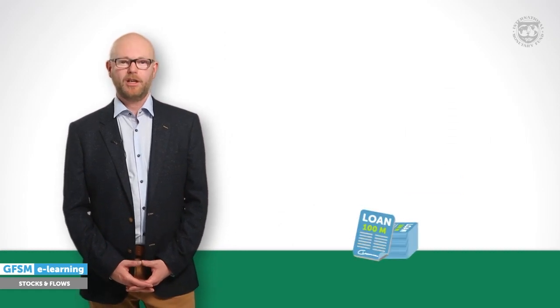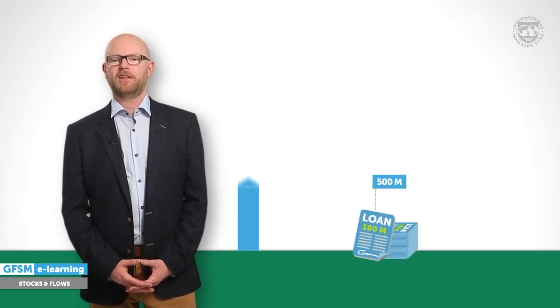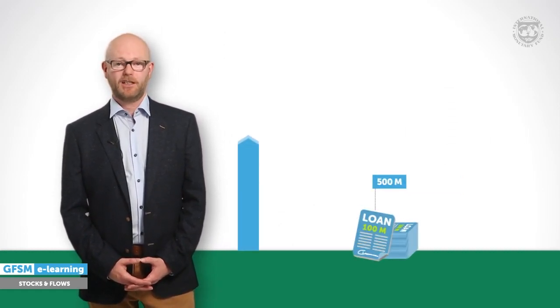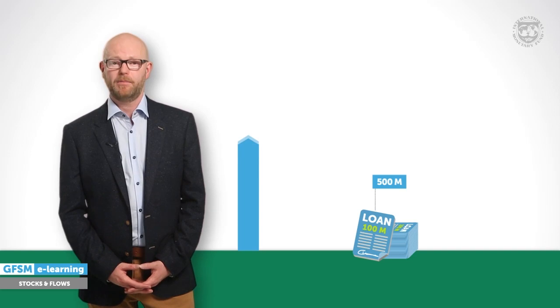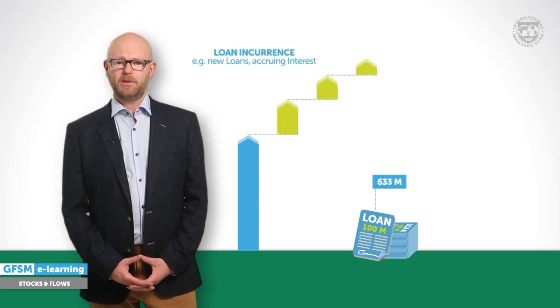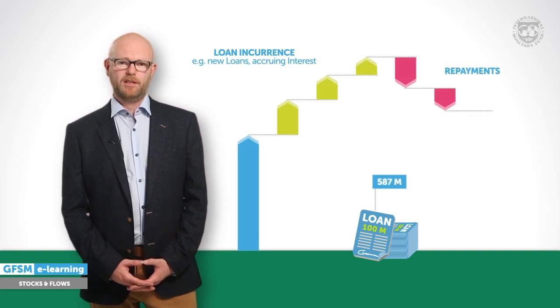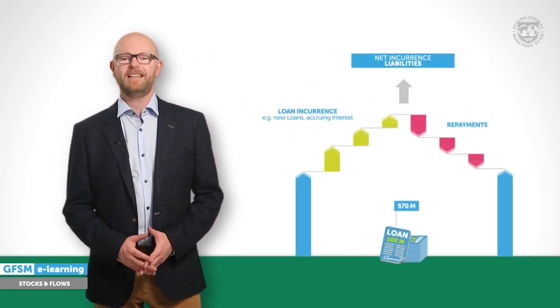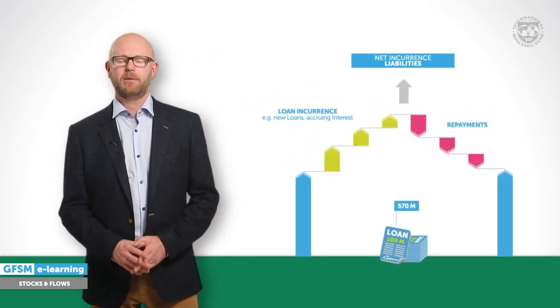But assets are just one side of stocks — liabilities being the other. Stock measures also exist for what the government owes to others. If, for example, the government has incurred loans, you can determine a stock value for this liability at a particular point in time. Newly incurred loans will add to that stock, as will accruing interest, and repayments will reduce the stock. Together, these flows are called net incurrence of liabilities.